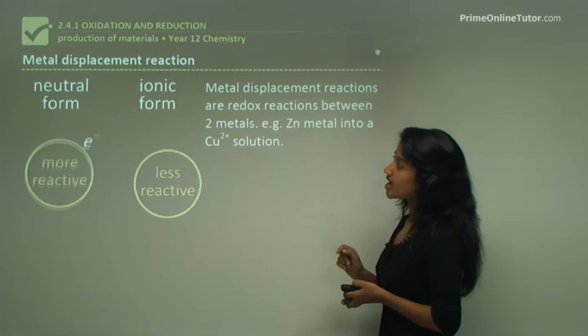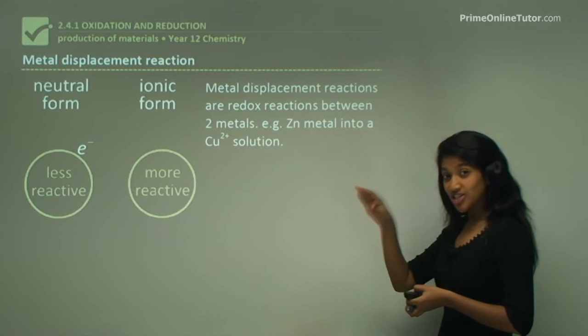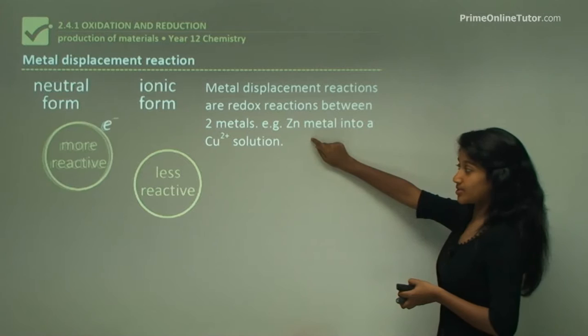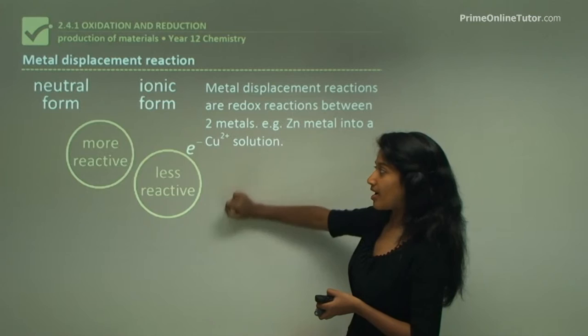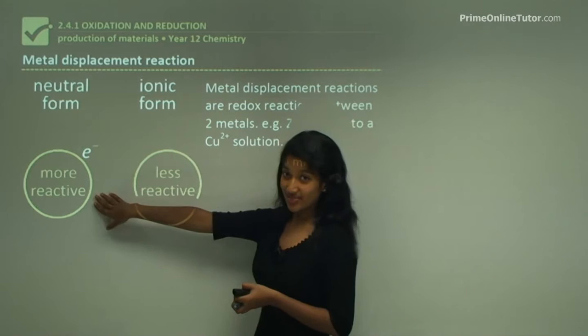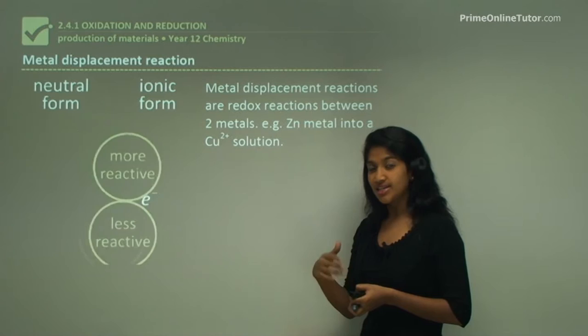Metal displacement reactions are redox reactions between two metals. For example, zinc metal in a copper ion solution: copper is in its ionic form while zinc is a neutral metal. The more reactive metal gives its electron to the less reactive one - the more reactive metal becomes an ion while the less reactive gains that electron and becomes a metal.